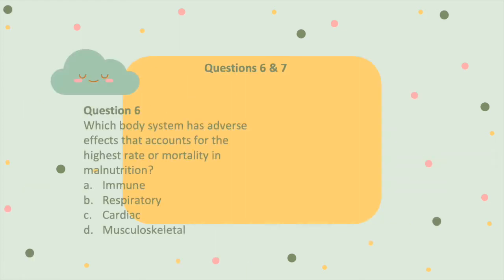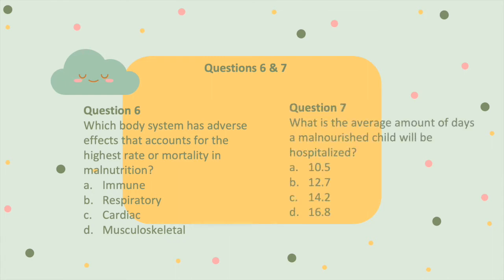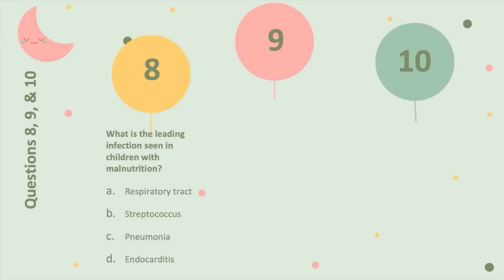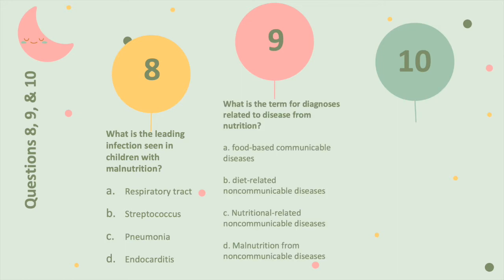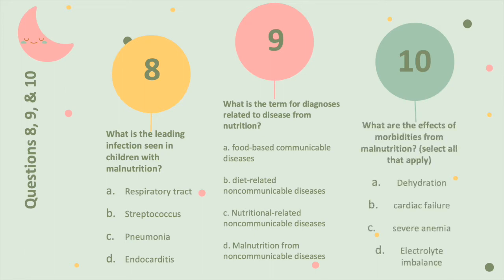Question 6: Which body system has adverse effects that accounts for the highest rate of mortality in malnutrition? Question 7: What is the average number of days a malnourished child will be hospitalized? Question 8: What is the leading infection seen in children with malnutrition? Question 9: What is the term for the diagnosis related to disease from nutrition? Question 10: What are the effects of morbidities from malnutrition?